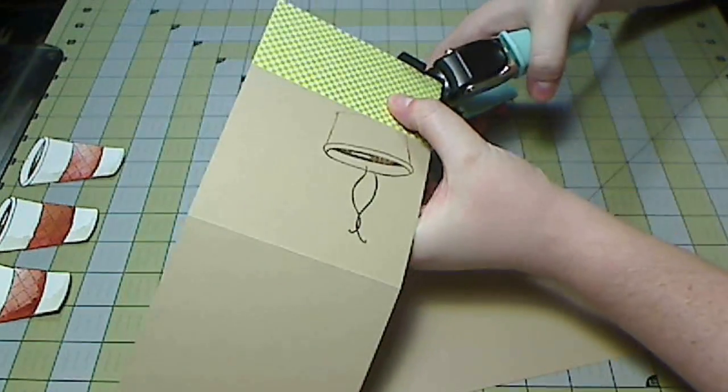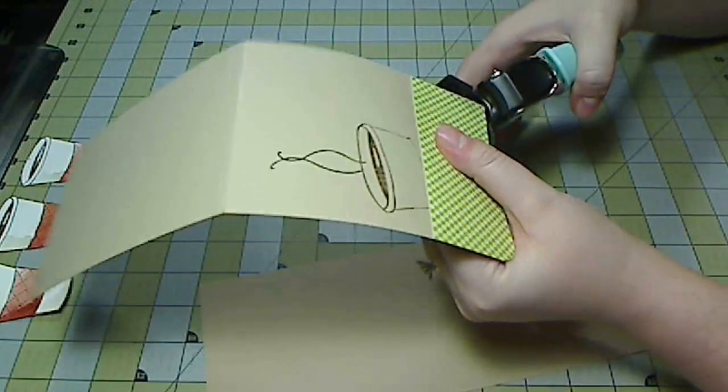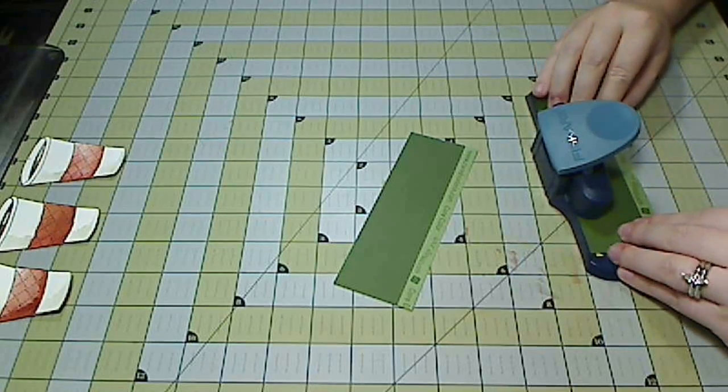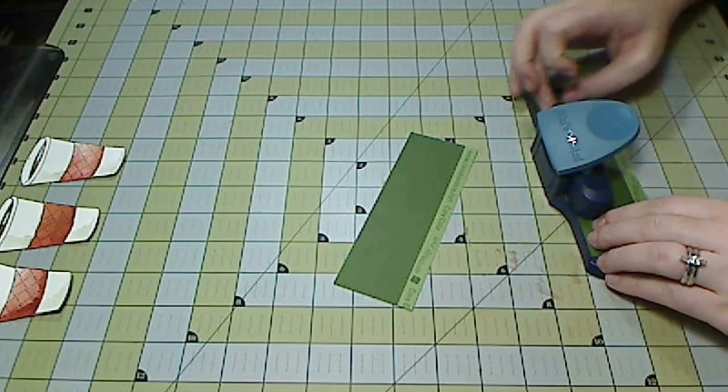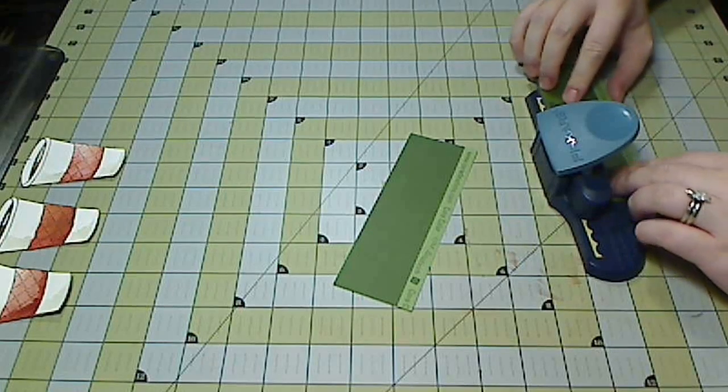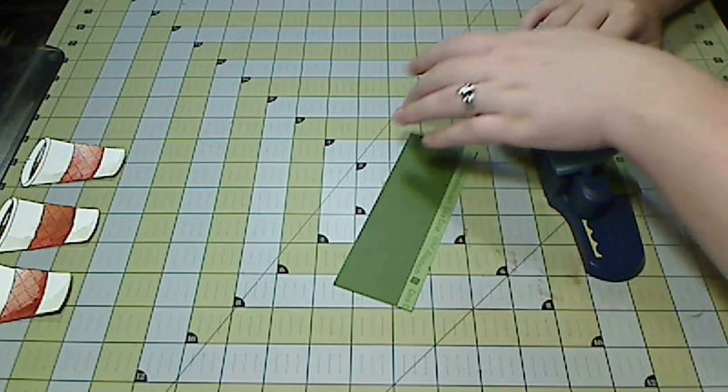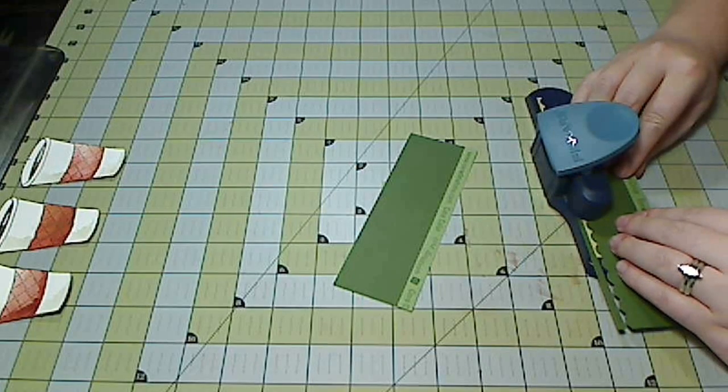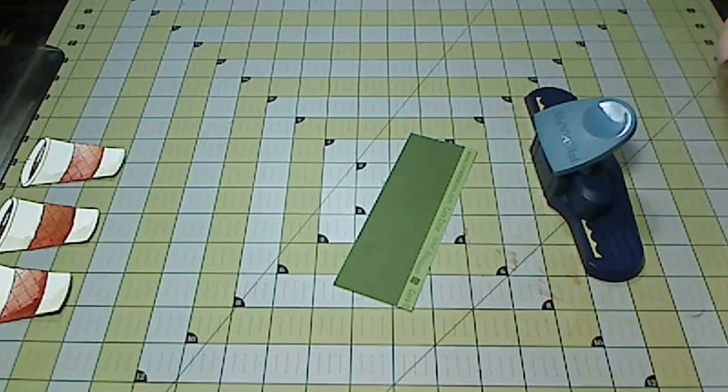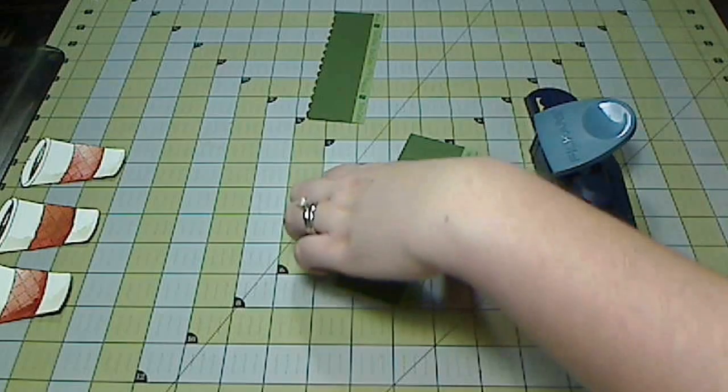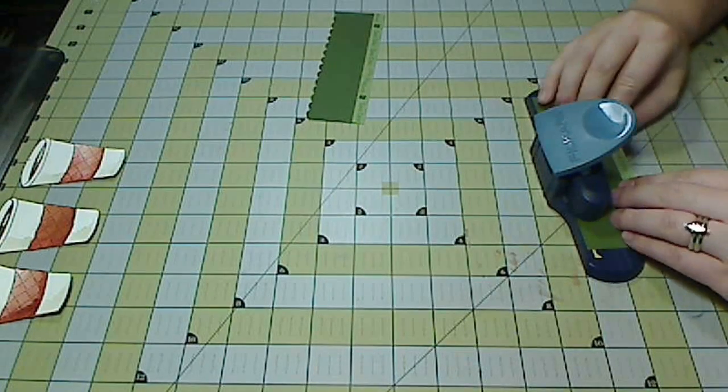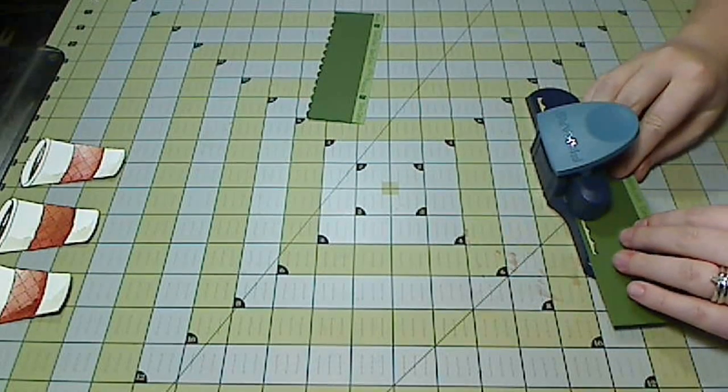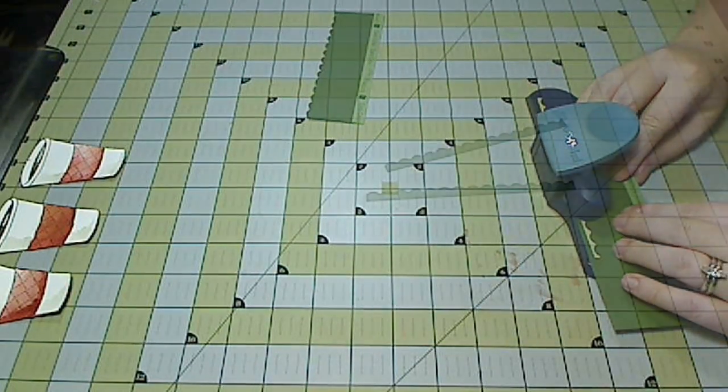So now I'm taking my corner chomper and I'm using a larger of the two corner rounders to round all the corners of my cards. And I'm taking a piece of Coordination's card stock and putting it in my Fiskars scalloped border punch and that's going to give me a little scalloped border that I'm going to add to the top of my card or rather to the top of the patterned paper on my card just for an added little bit of fun and whimsy.